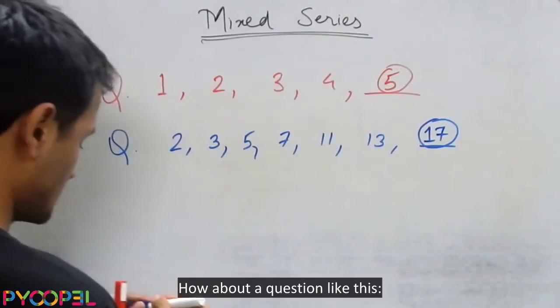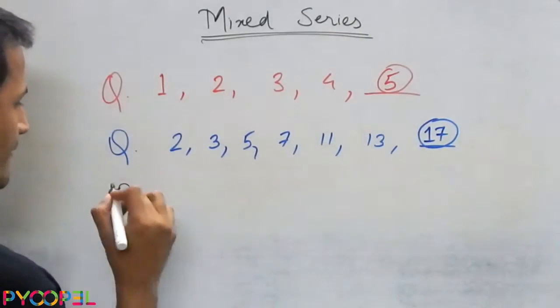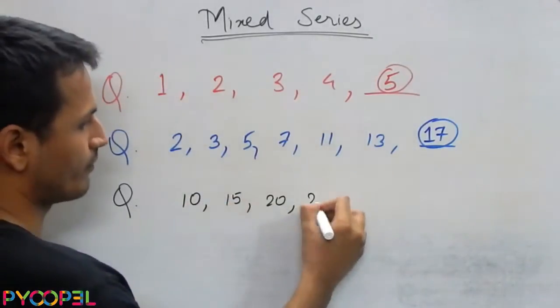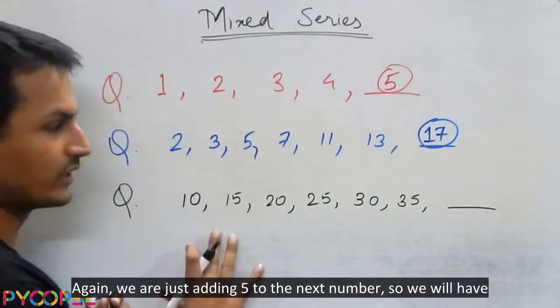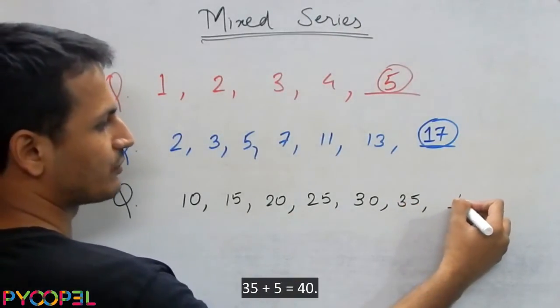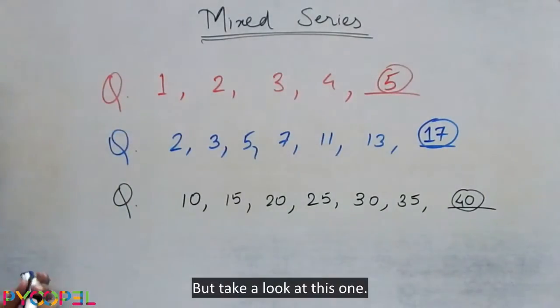How about the question like this? Again we are just adding 5 to the next number so we will have 35 plus 5 is 40. But take a look at this one.